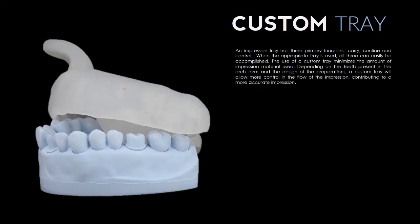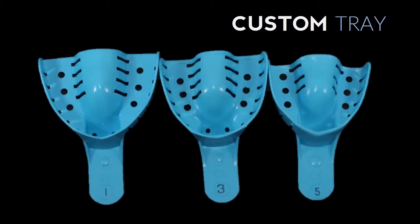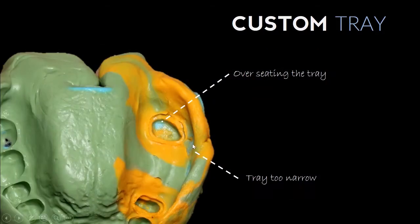In this lecture we're going to cover one of your simulation exercises, which is the fabrication of a custom tray. Remember in making a crown, one of the steps we need to take is to make a mold or an impression of your patient's mouth.